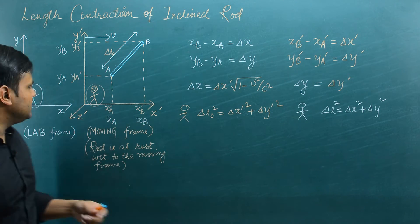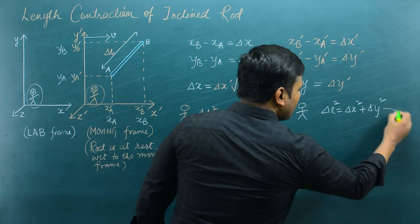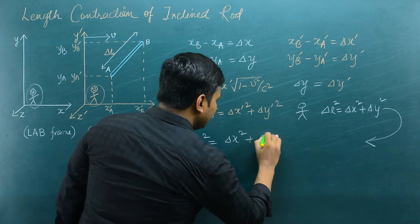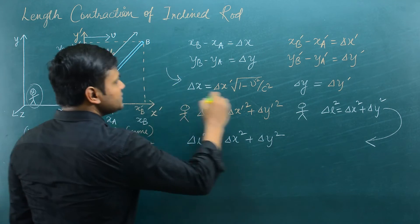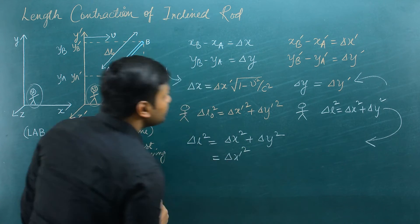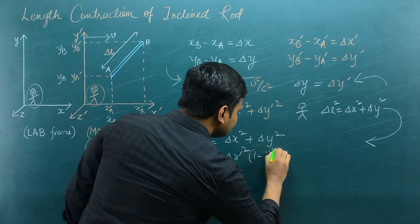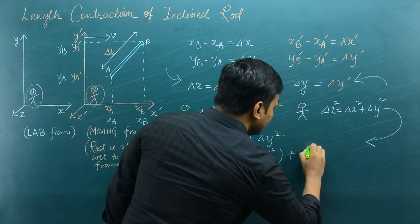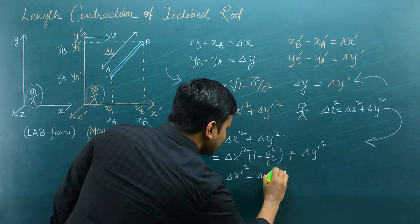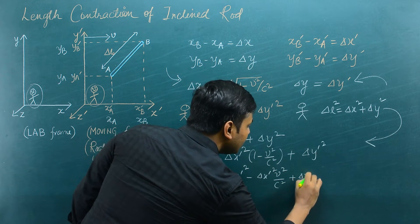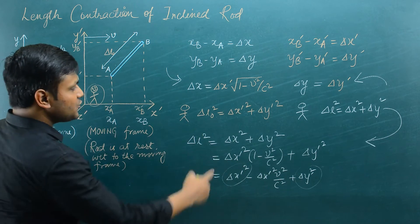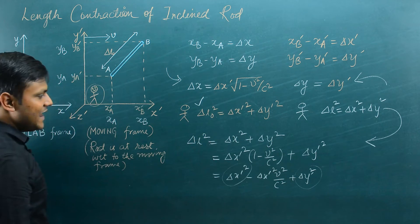Using this expression, Δl² = Δx² + Δy², I apply the two equations. Δx² equals Δx dash² times (1 − v²/c²), and Δy² equals Δy dash². This becomes Δx dash² minus Δx dash² v²/c² plus Δy dash². Since Δx dash² plus Δy dash² equals Δl₀² (the proper length squared), I can relate Δx dash with the proper length of the rod by defining an angle of inclination.